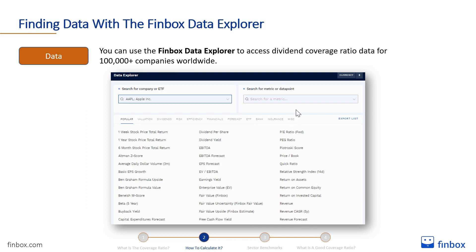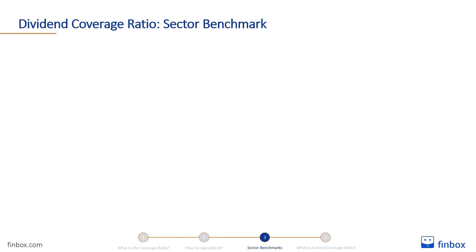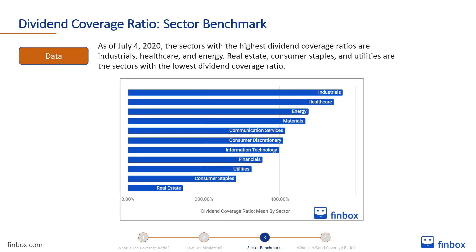The average dividend coverage ratio varies greatly among different sectors, so it is very useful to compare a company to its sector while evaluating it. As of July 4, 2020, the sectors with the highest dividend coverage ratios are industrials, healthcare, and energy. Real estate, consumer staples, and utilities are the sectors with the lowest dividend coverage ratio.